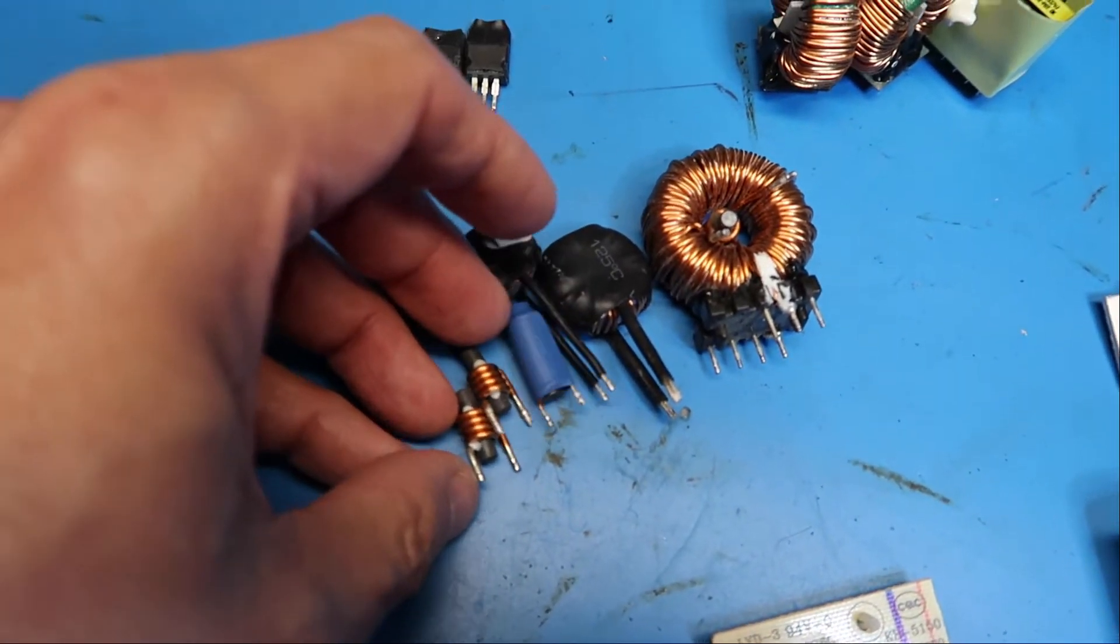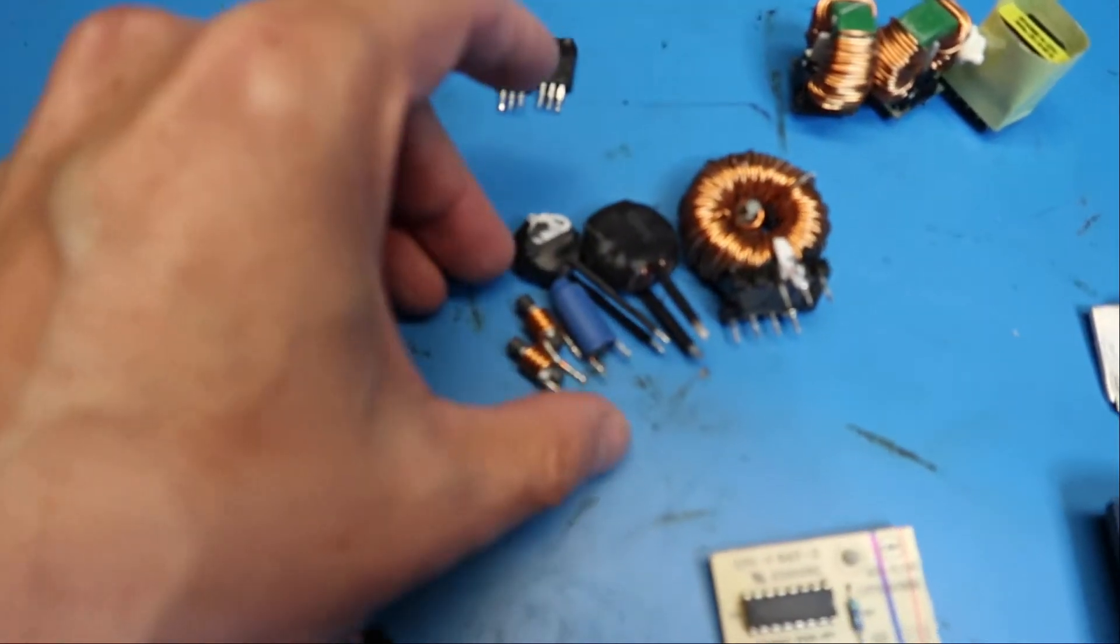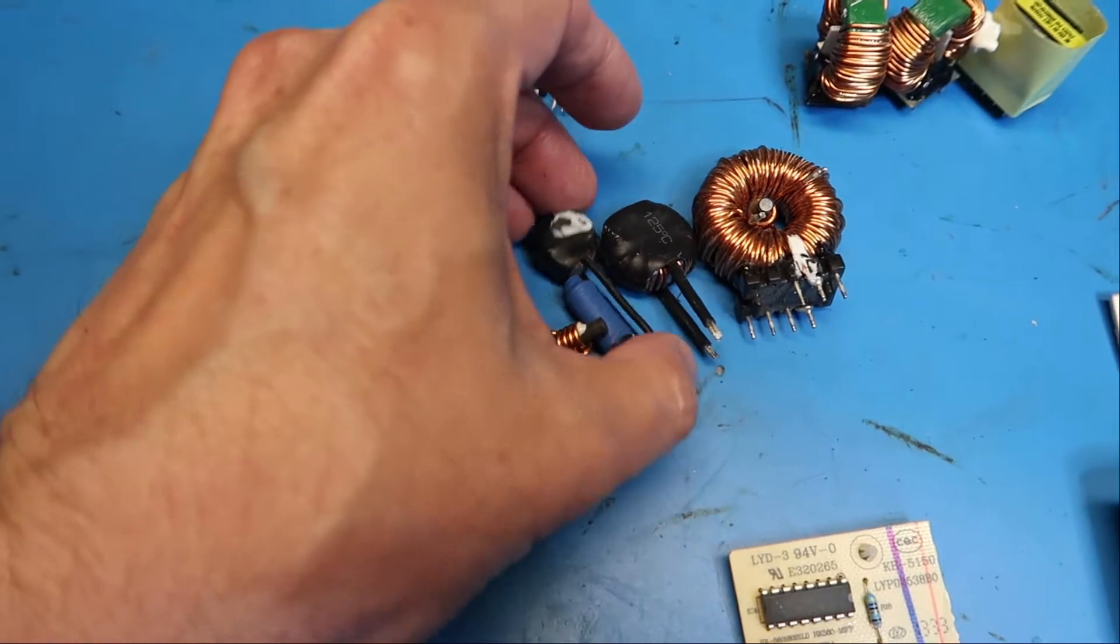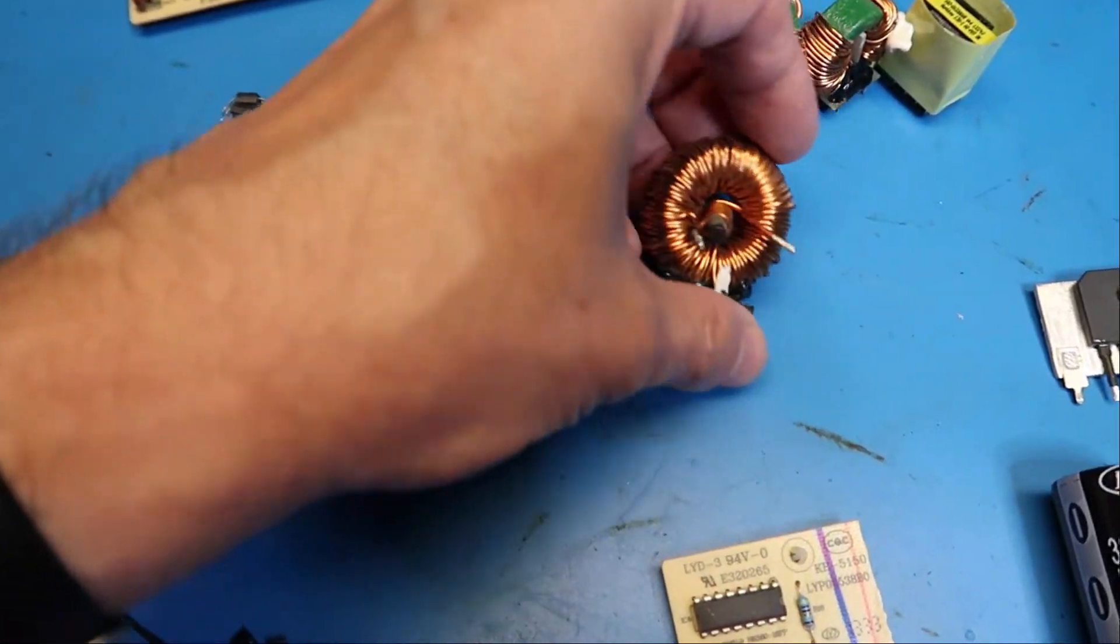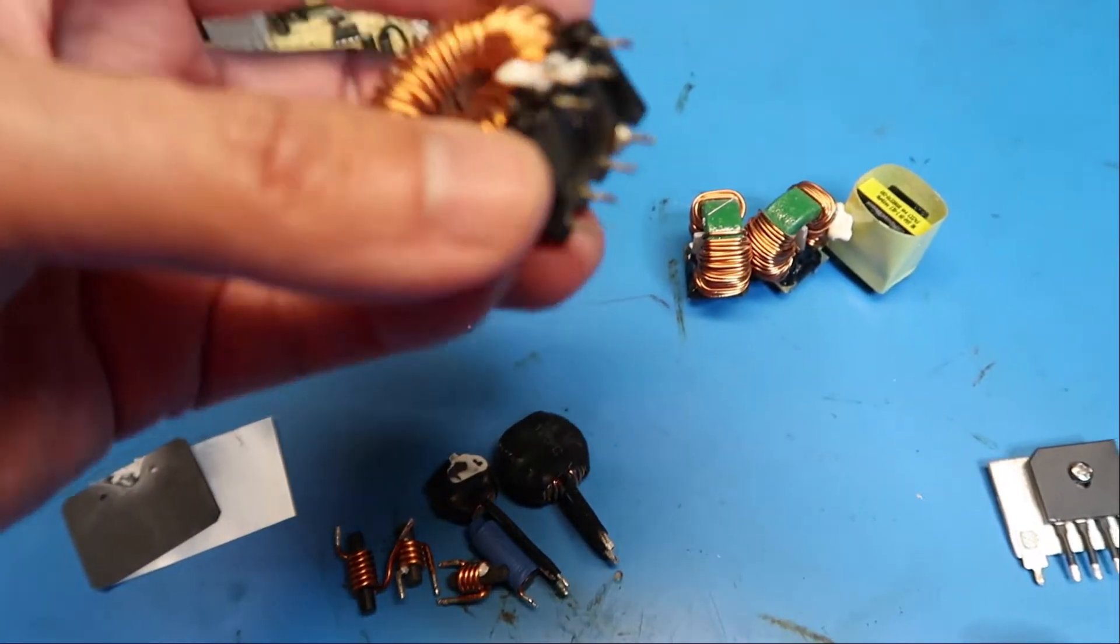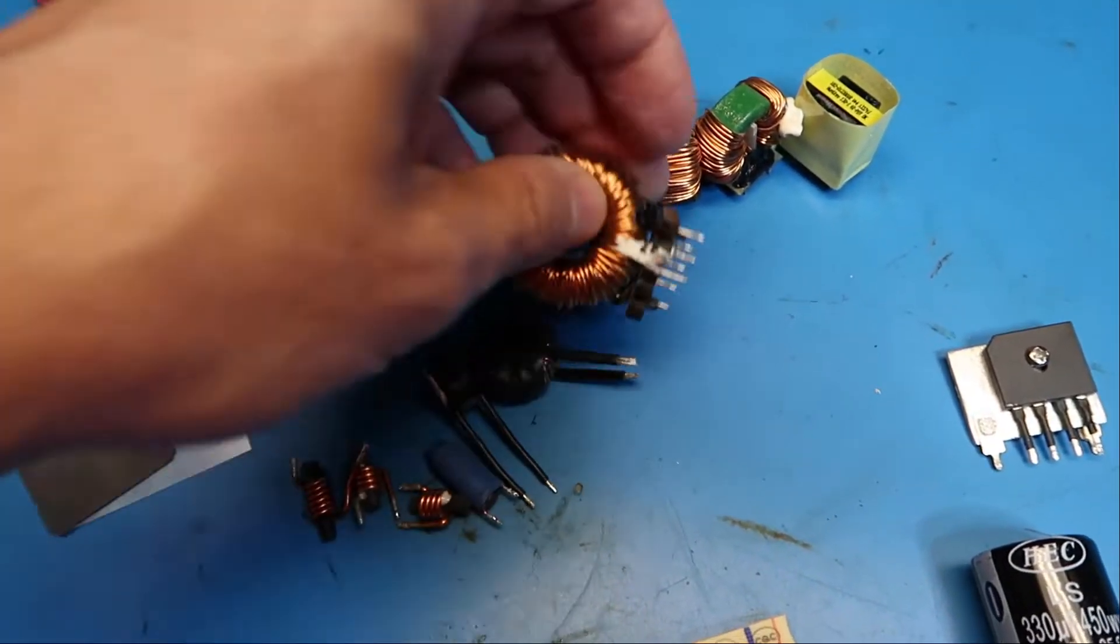These are inductors also called chokes of various sizes. They have this type that's kind of a stand-up smaller size medium and even though there's one in the middle, even though this has all these pins on it there's only two that's connected. So I know that's a choke.